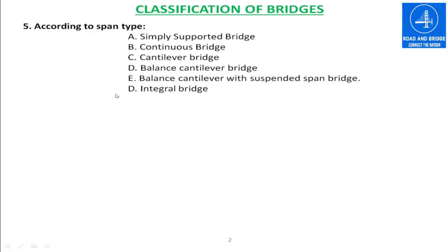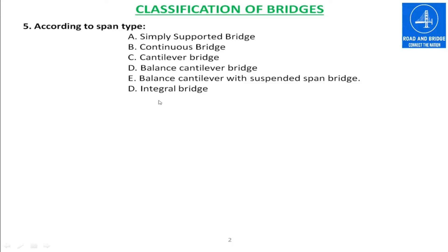According to the type of spans, the bridge can be classified into six categories: simply supported bridge, continuous bridge, cantilever bridge, balanced cantilever bridge, balanced cantilever with suspended span bridge, and integral bridge.